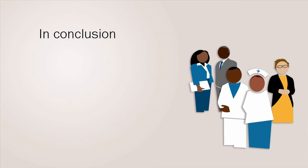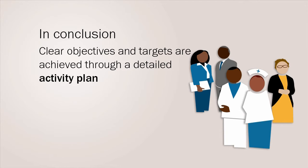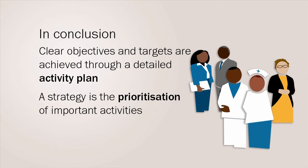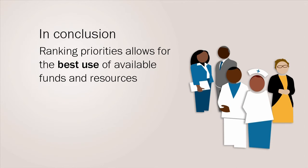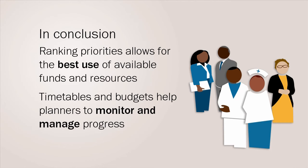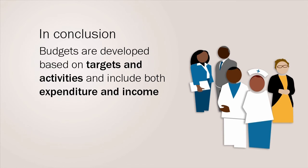In conclusion: clear objectives and targets are achieved through a detailed activity plan. Not everything can be done at once; a strategy is the prioritization of the important activities which must be done. Ranking priorities also allows for the best use of available funds and resources for integrated, sustainable, equitable and excellent services — known as ISEE. Timetables and budgets help planners to monitor and manage the progress of activities. Finally, budgets are developed based on targets and activities, and they include both expenditure and income. Budgets are updated and reported on to management every month.